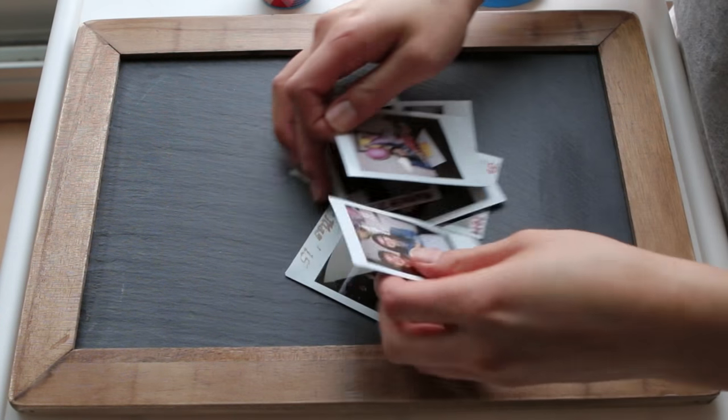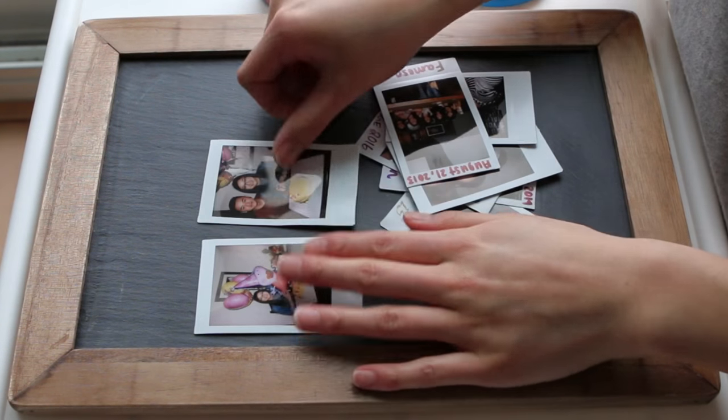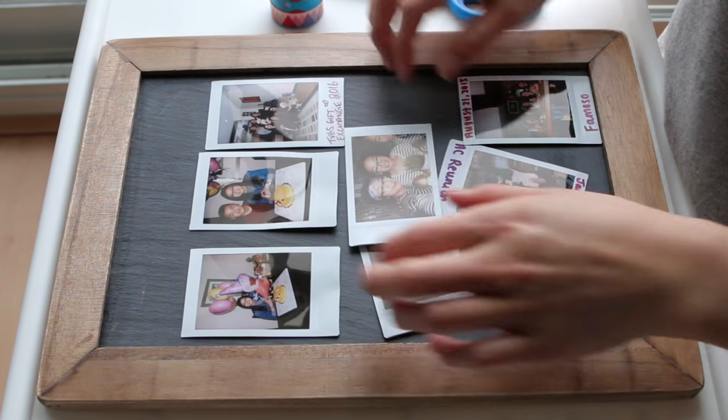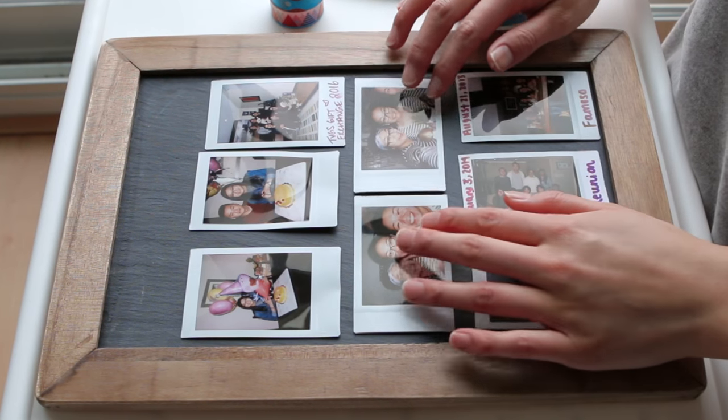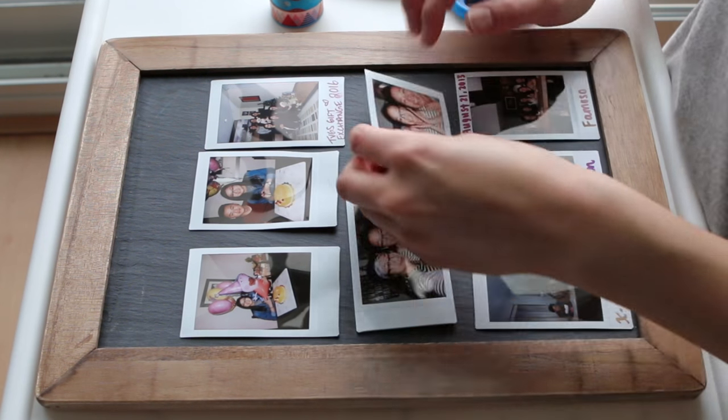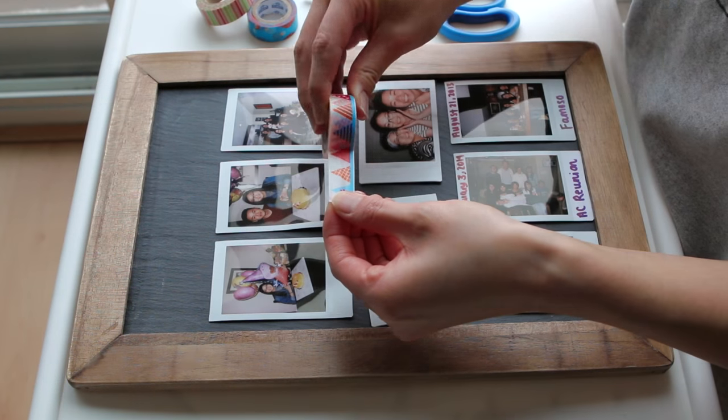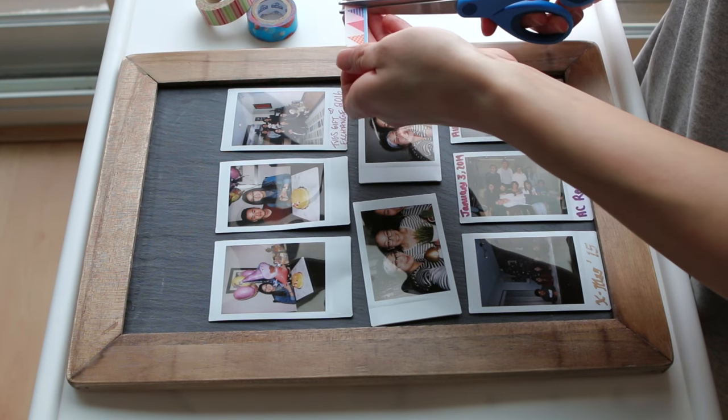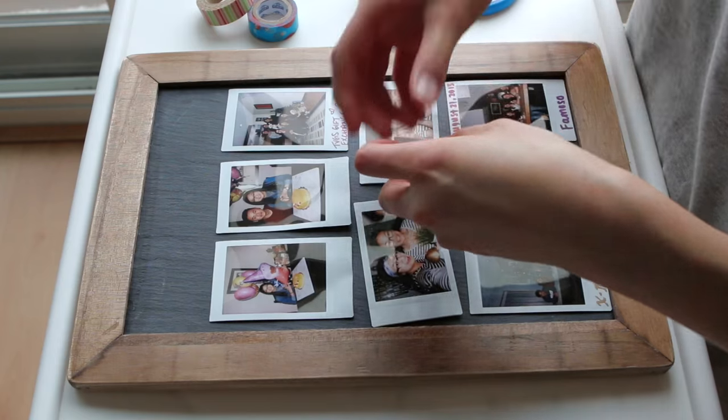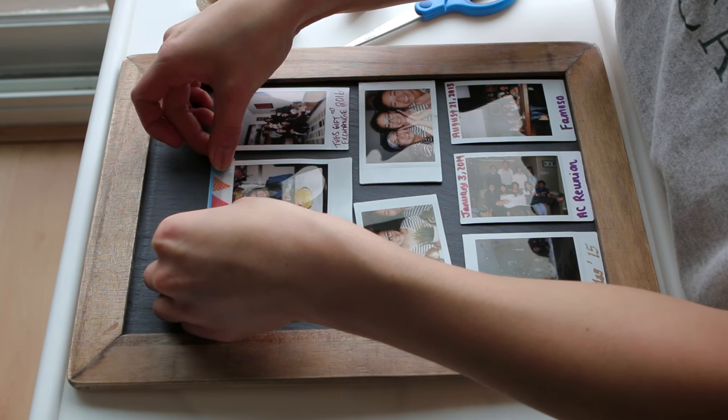So this one is fairly simple. You're just going to arrange the Polaroids however you want them to be displayed. And once you're happy with the arrangement, go ahead and cut strips of washi tape to the same length of the Polaroid, and just tape them down. And make sure that you're leaving a little bit of space at the top so you have some room to write a little something something if you want, or decorate it however you want.